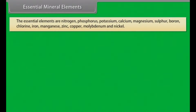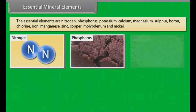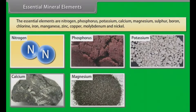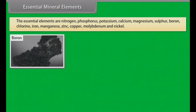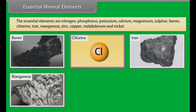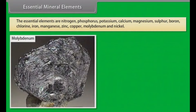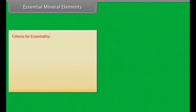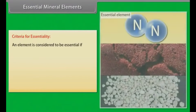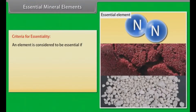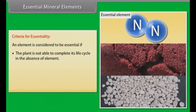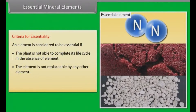The essential mineral elements are: Nitrogen, Phosphorus, Potassium, Calcium, Magnesium, Sulphur, Boron, Chlorine, Iron, Manganese, Zinc, Copper, Molybdenum, and Nickel. Criteria for essentiality: an element is considered essential if the plant cannot complete its life cycle in its absence, it cannot be replaced by any other element, and it is directly involved in the metabolism of the plant.